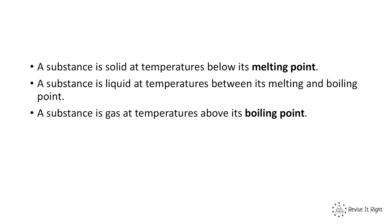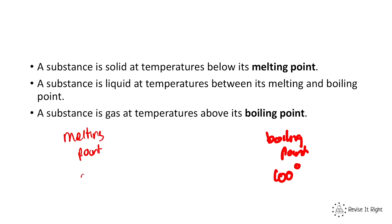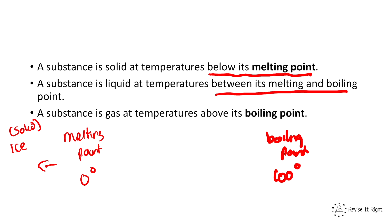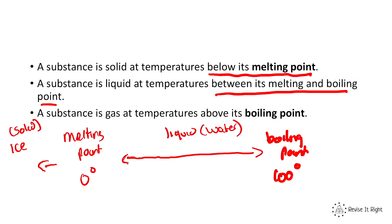Let me use the example of water to help explain this. Water has a boiling point of 100 degrees and a melting point of 0 degrees. If water is below its melting point, i.e. below 0 degrees, it will be ice — it will be a solid. If water is between its melting point and boiling point, so between 0 and 100 degrees, it will be liquid, because it's not cool enough to freeze but not hot enough to boil.